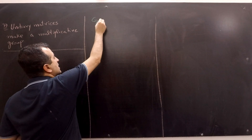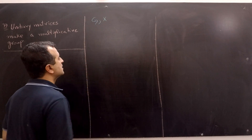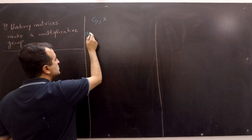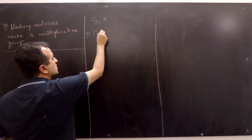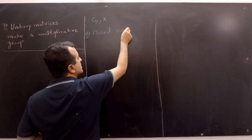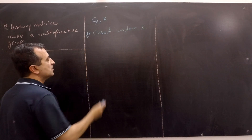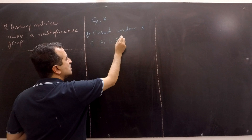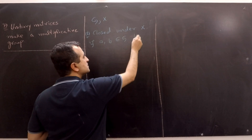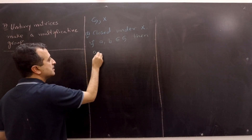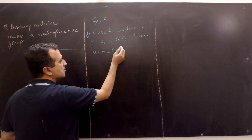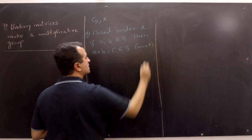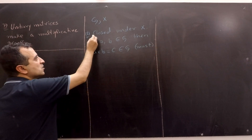We have a group G under the operation of multiplication. Property number 1 states that group G must be closed under multiplication. This implies that if A and B are two members of group G, then A times B equals C must also be a member of group G. This is the property of being closed under multiplication.